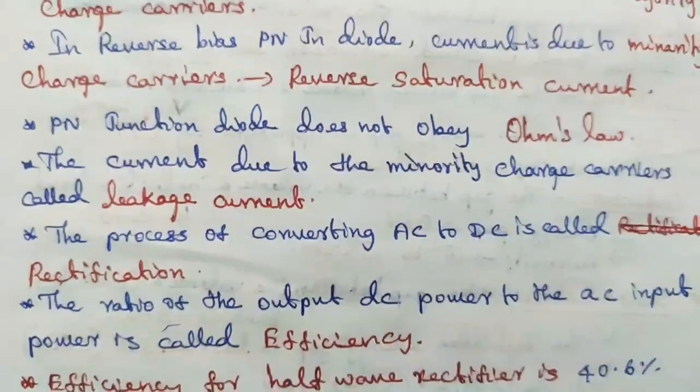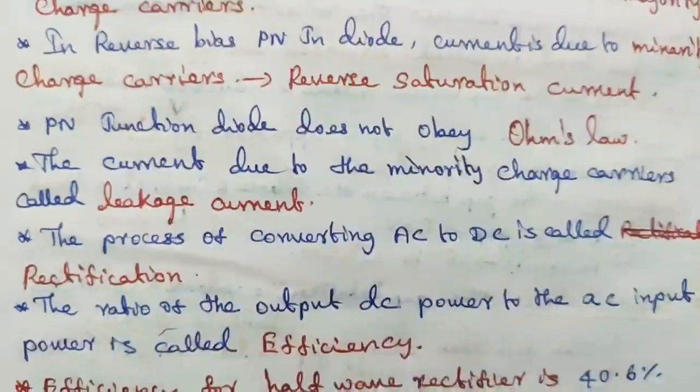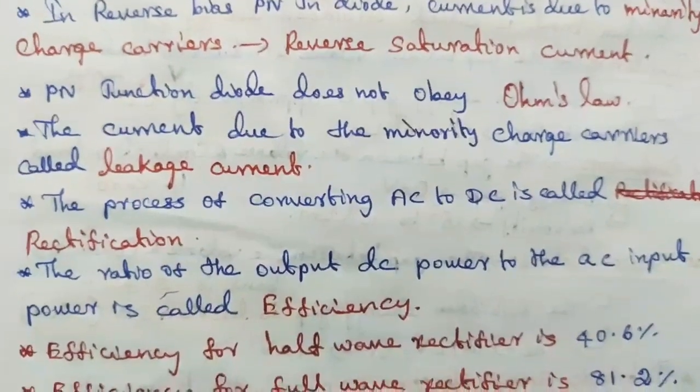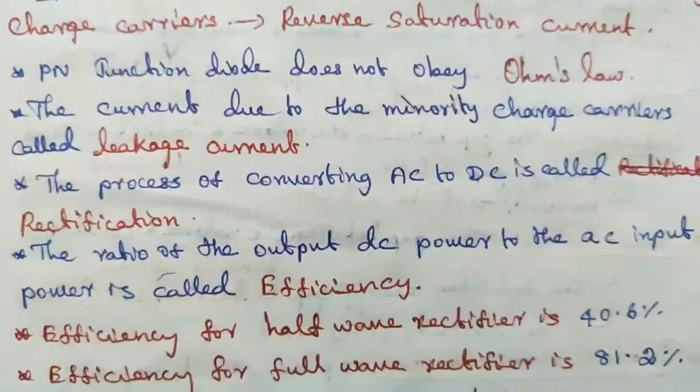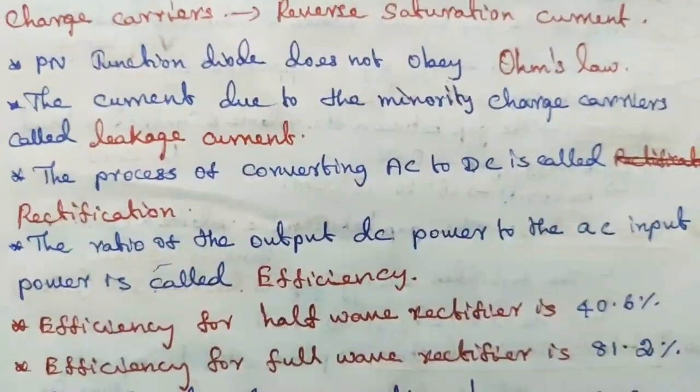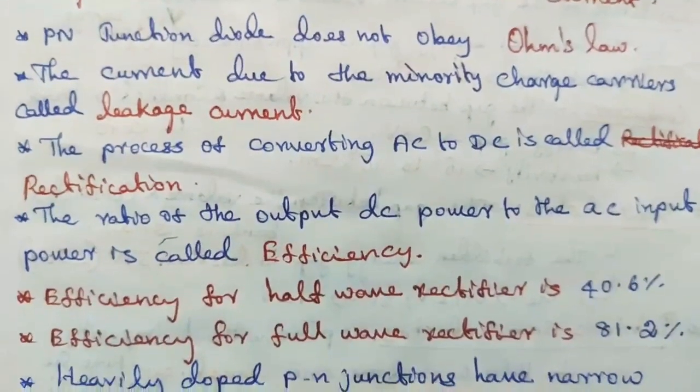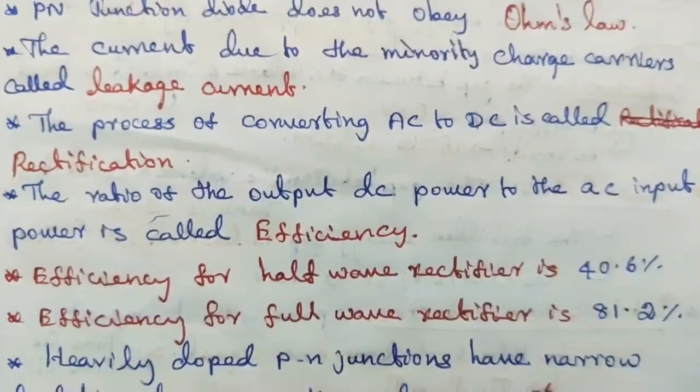The ratio of the output DC power to the AC input power is called efficiency. Efficiency for half-wave rectifier is 40.6%. Efficiency for full-wave rectifier is 81.2%.